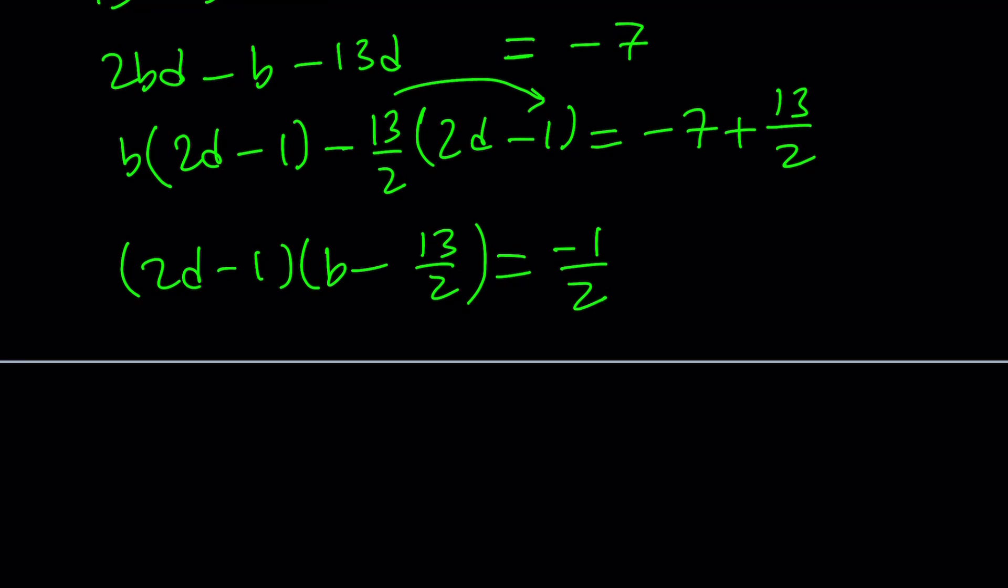Now, notice that we can write this as (2D - 1)(B - 13/2) = -7 times 2, -14. That's going to give me -1/2. Obviously, you would probably 99% would multiply both sides by 2 to get rid of all the fractions. And if you do that, you're going to get, I want to multiply this by 2 to get rid of the fractions. So, it's going to be (2D - 1)(2B - 13) = -1.